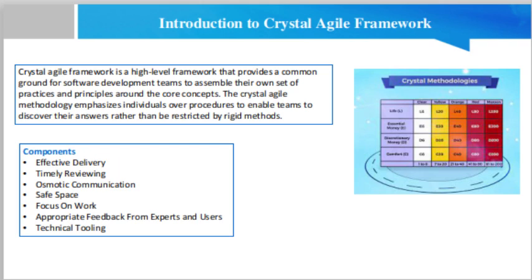The sixth component is appropriate feedback from experts and users. Team members should receive feedback and constructive criticism from real experts in the field. Moreover, the customers need to communicate their needs with the development team to improve the quality and user experience. The seventh component is technical tooling. To minimize the cost surrounding trial and error, technology provides a helping hand to manage it without much human intervention. Thus, automated testing, configuration management, and continuous deployment should be accessible to the product development teams.